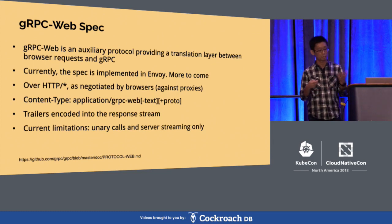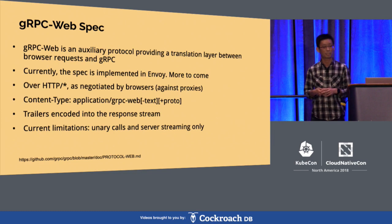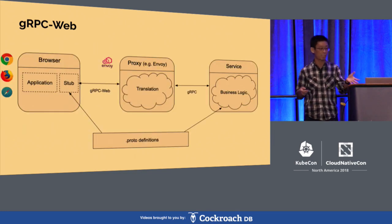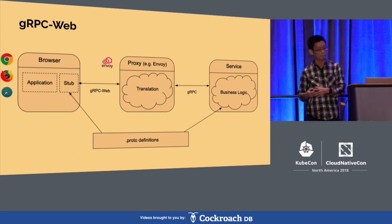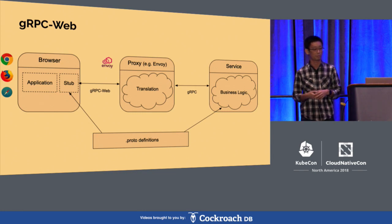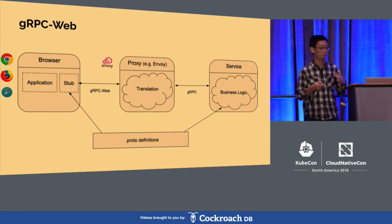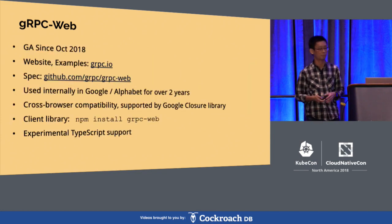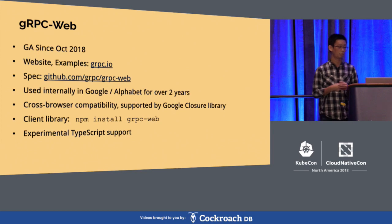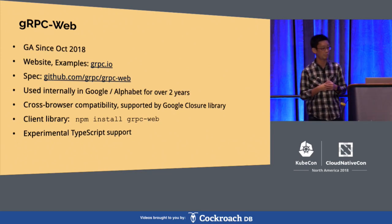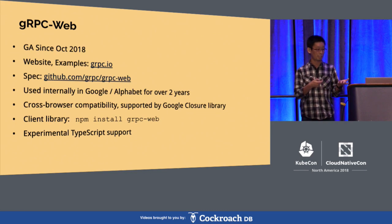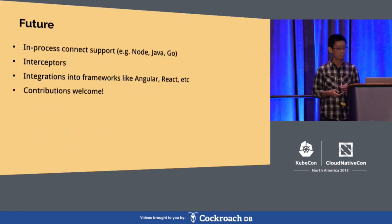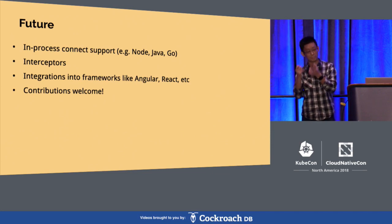The limitation right now is you can only do unary and server streaming calls. We are looking into how we can support bi-directional streaming and client streaming later. The updated architecture for your web applications is that in your browser, you use the gRPC Web client and talk gRPC Web with an Envoy proxy, which does the translation and communicates in gRPC with your back-end. From the browser perspective, it's just like a normal client written in Node, C++, or Java. The project has been GA for a couple of months, and we are seeking feedback on your use cases — please visit us on grpc.io. The project has been used internally for two years already, and we've added TypeScript support.